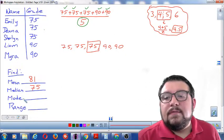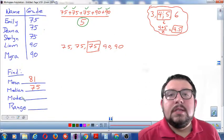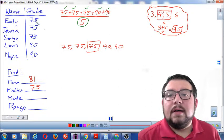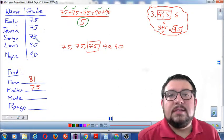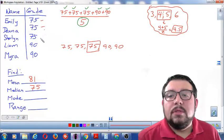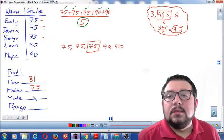Now, we look at our data set for the mode. Mode means the number that repeats the most. So, here we have 75, 75, and 75, and it repeats three times. 1, 2, 3. And then we have 90, which only appears twice. So, between 75 and 90, 75 wins because it repeats more.